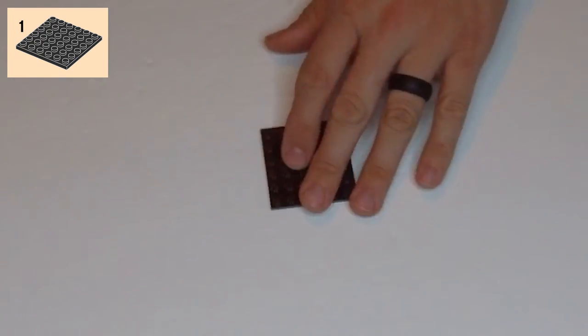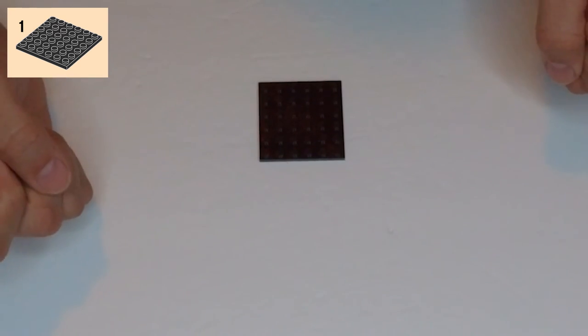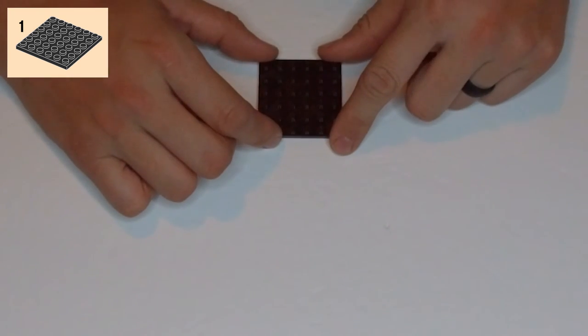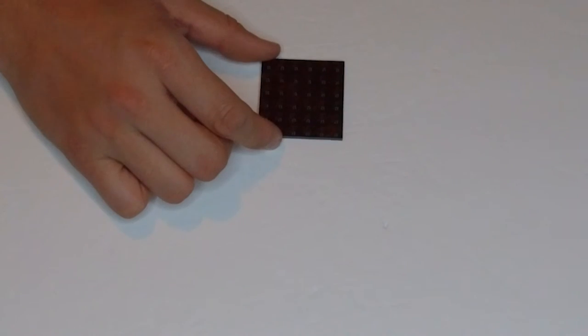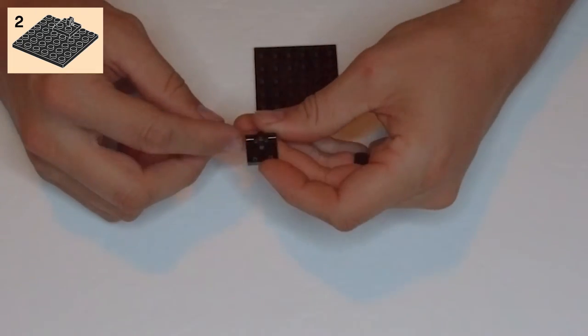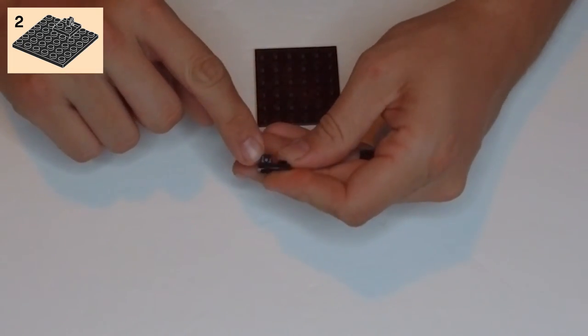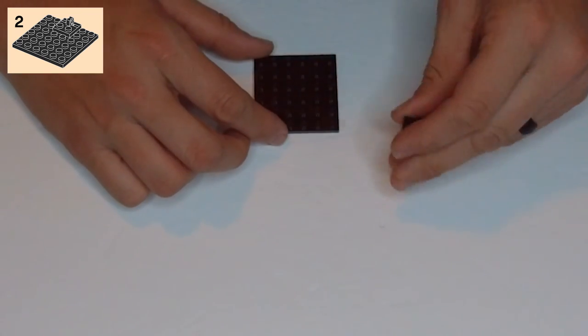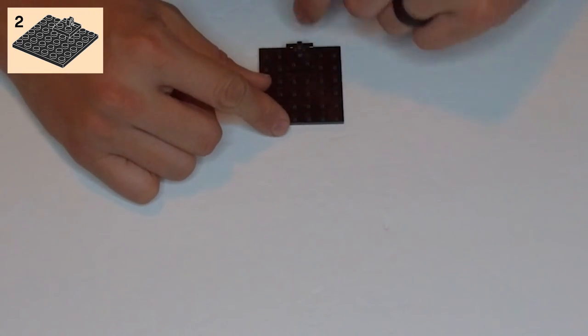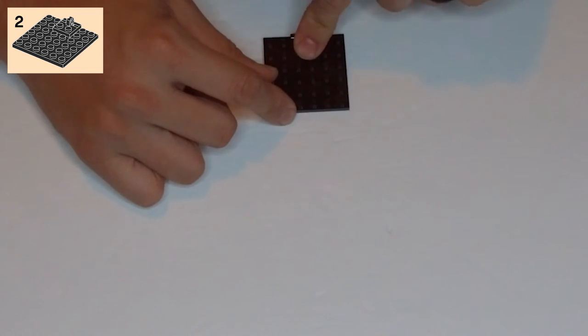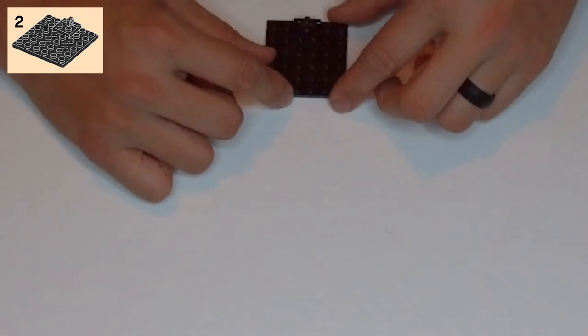So first off, we want to get this six by six plate in black. And then in step two, we're going to grab this black two by two tile. It has two studs, and the other side has a little tab or a hinge. And you're going to put that on the back here, centered in the back, on top I guess, so that the hinge part is on the outside. This black is really hard to see, let me zoom in closer.